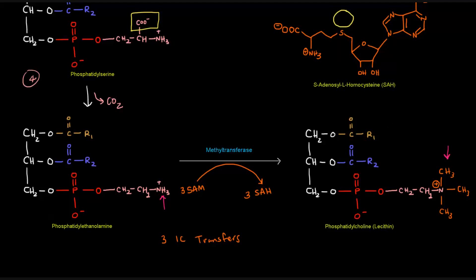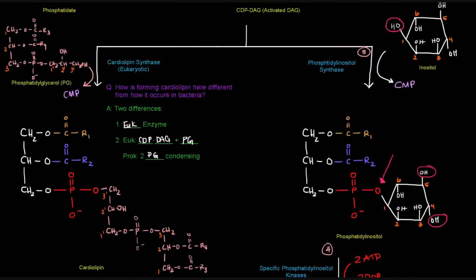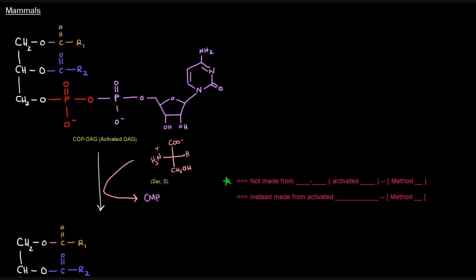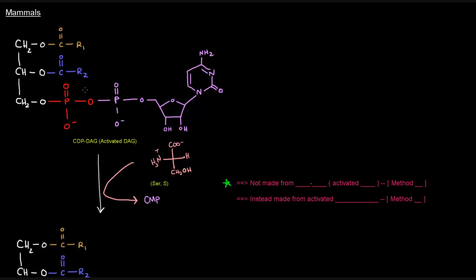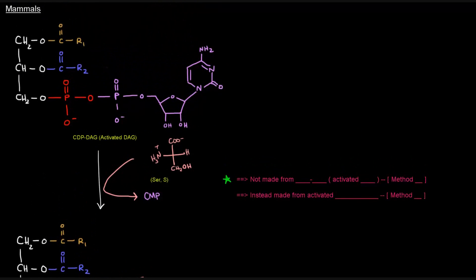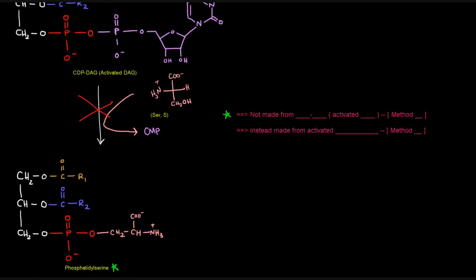All right. We got mammals now. So, let's say that we're starting from a CDPDAG. Again, an activated DAG. We want to add serine, just like we did before in yeast, to give us phosphatidylserine. Let's say we wanted to do that. Well, in mammals, that's going to be a no-no. That does not happen.